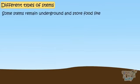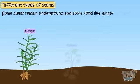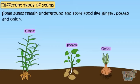Some stems remain underground and store food like ginger, potato and onion. These are actually stems that we eat.